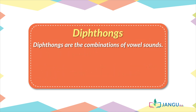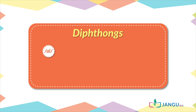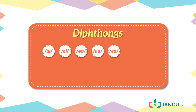Diphthongs are a combination of vowel sounds. For example, the diphthong sounds include A, O, A, I, and U.